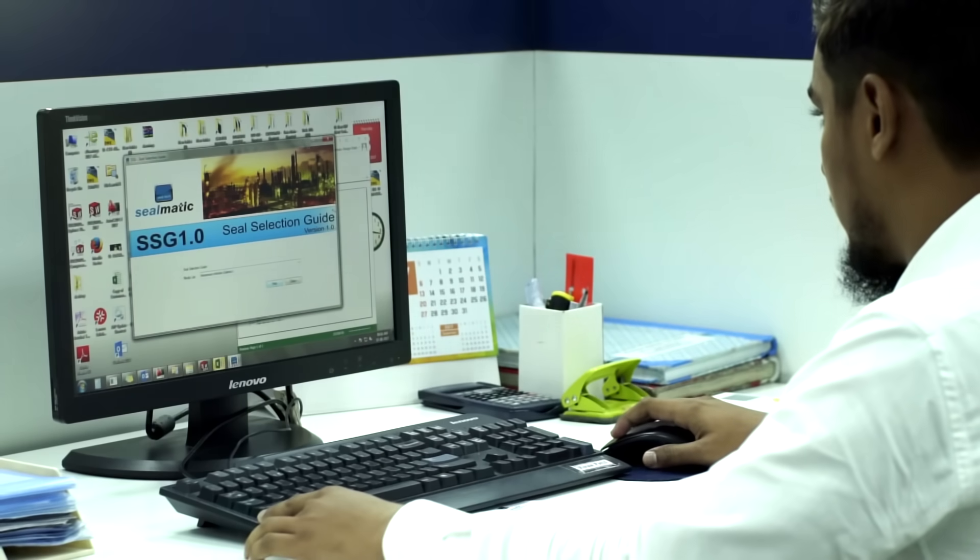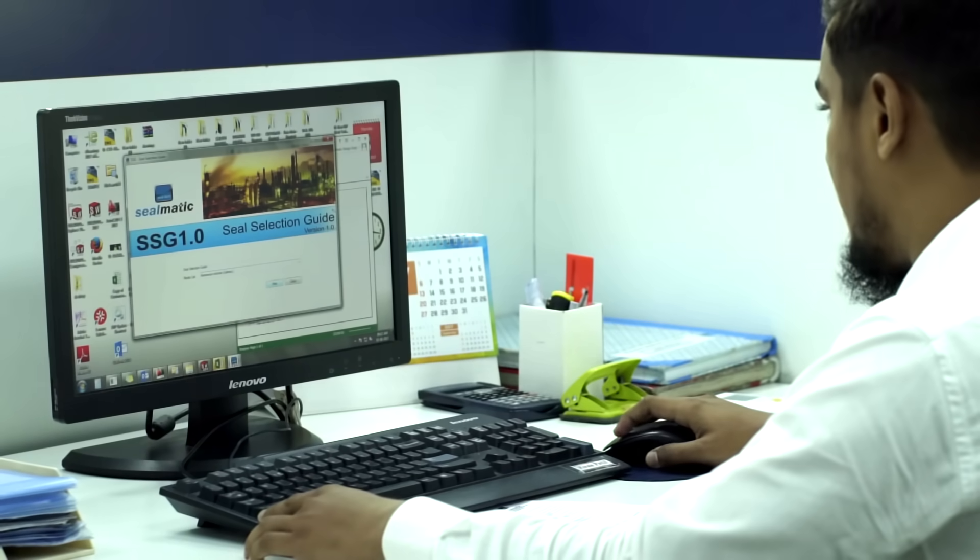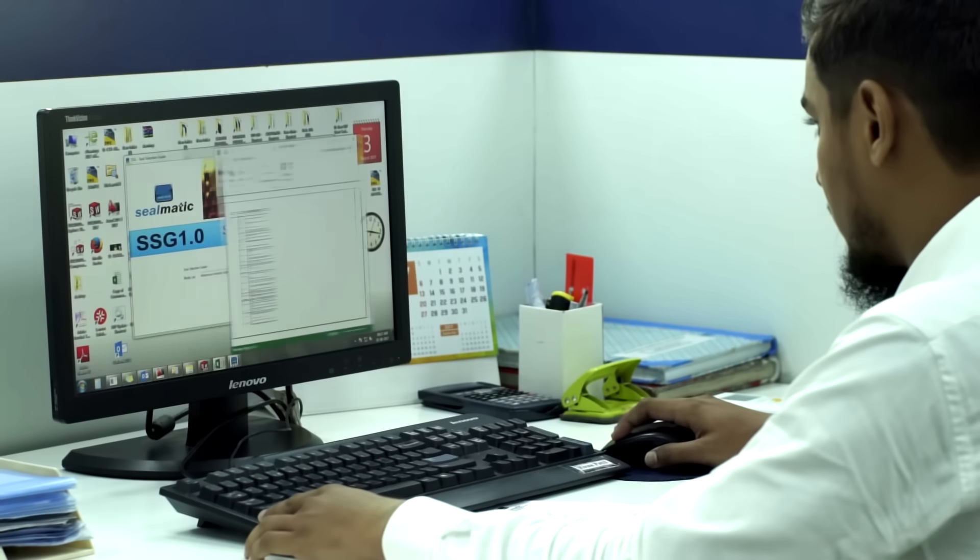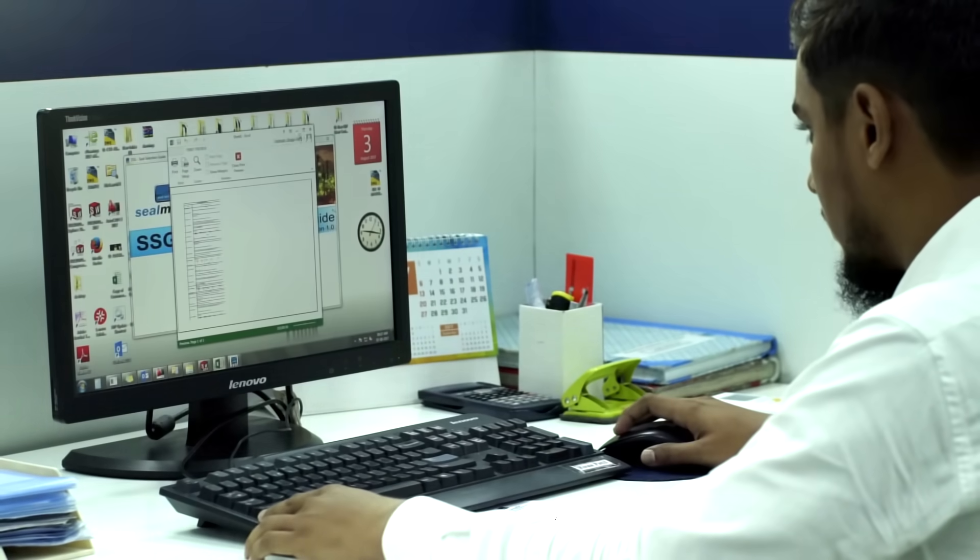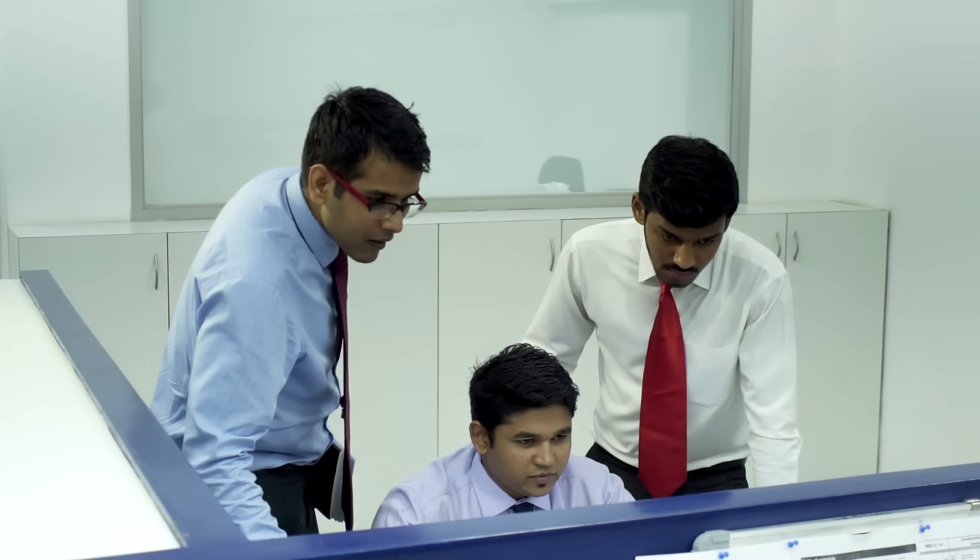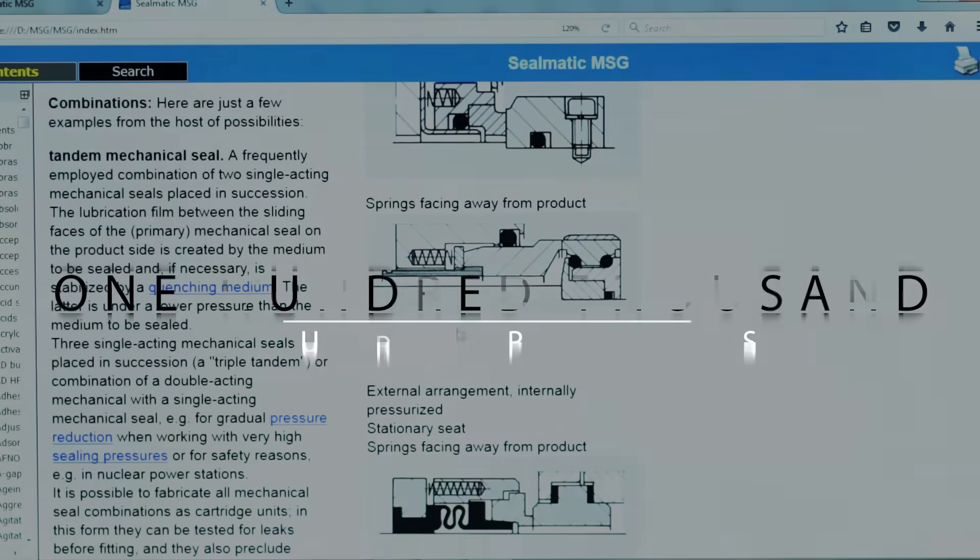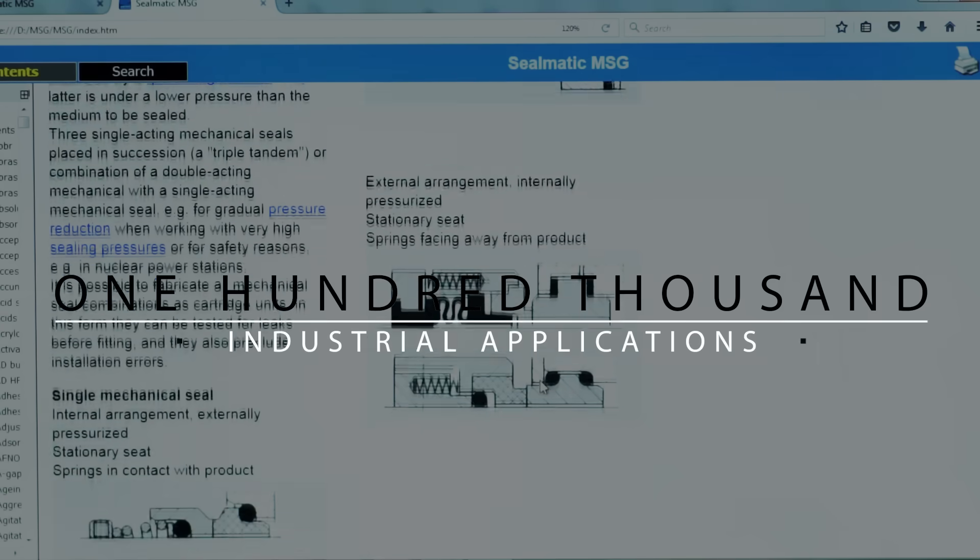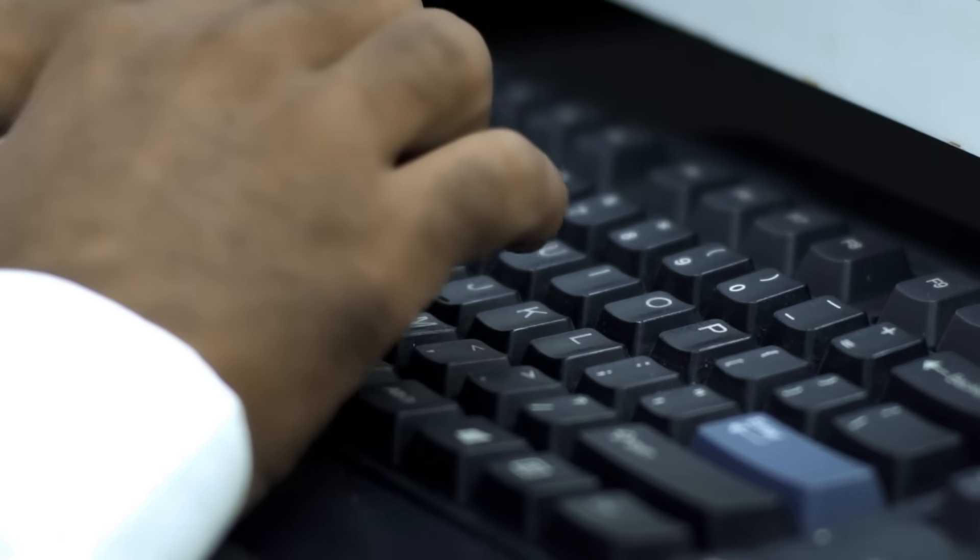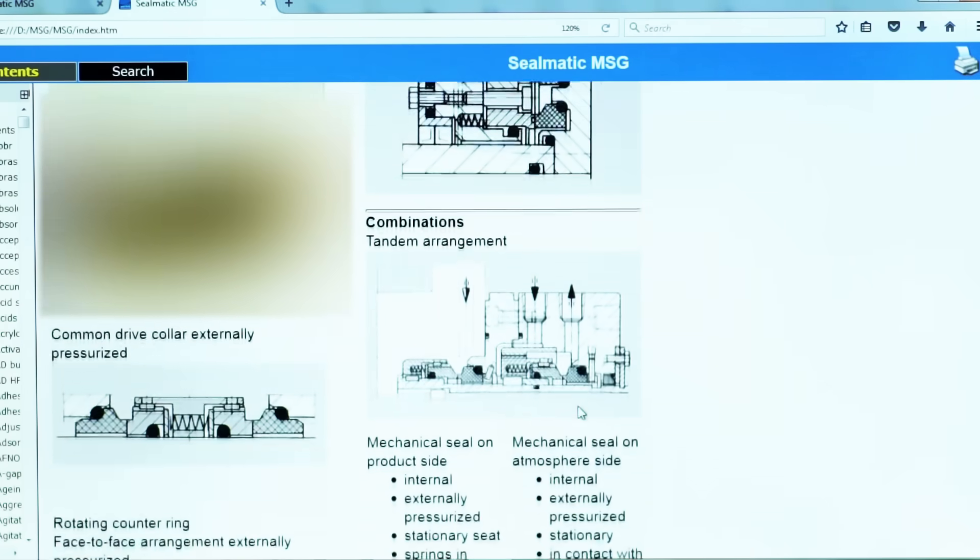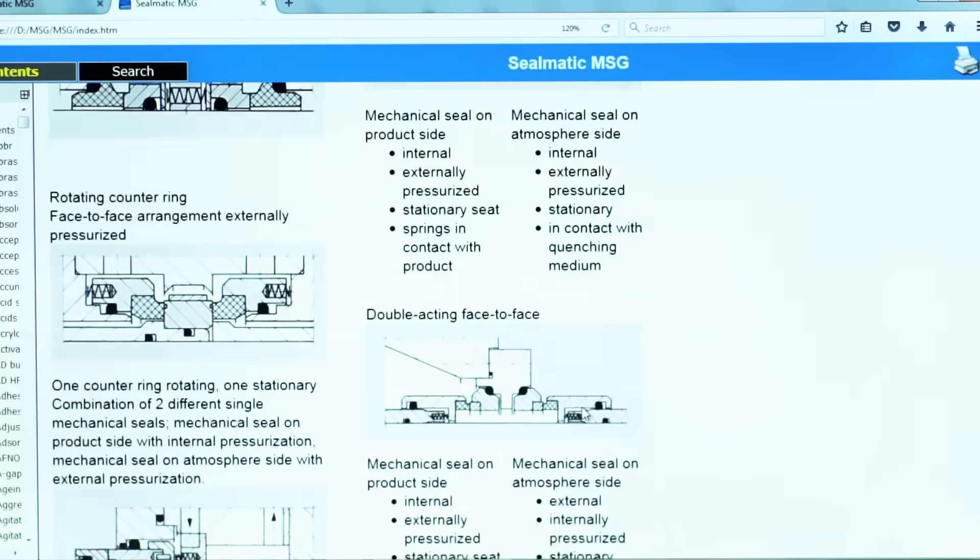Our collective knowledge of over 100 years has helped us create programs that can solve any sealing question at the click of a button. With the Seal's Selection Guide and Mechanical Seal's Guide, engineers refer to a data bank of more than 100,000 industrial applications by entering the product media name and operating parameters. SealMatic can offer tailor-made solutions immediately.